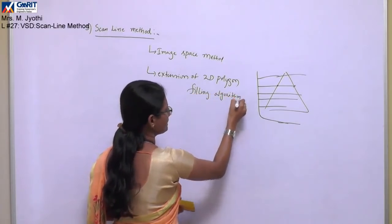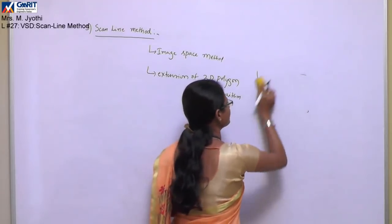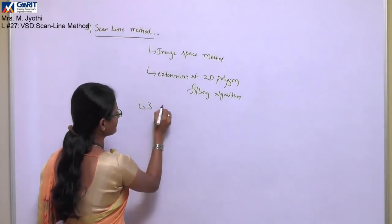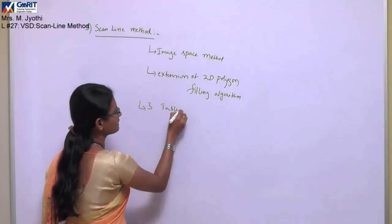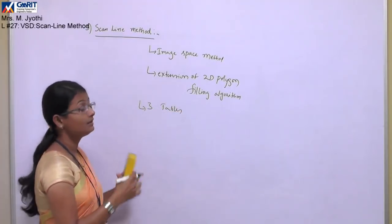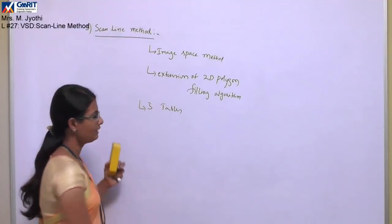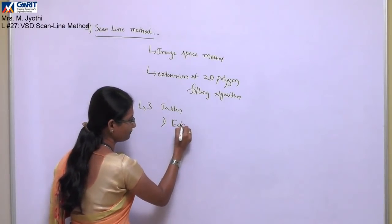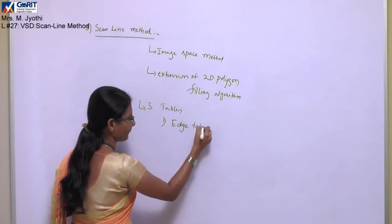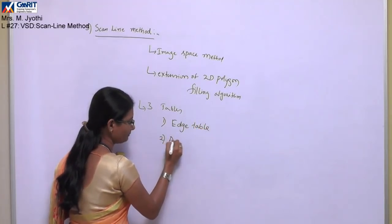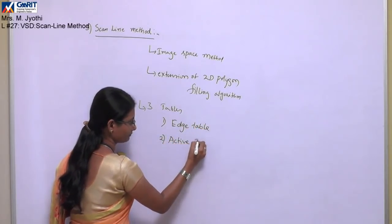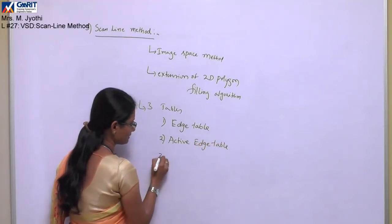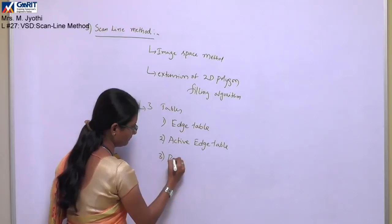This method uses three data structures, which are called three tables. These three tables used in the scan line visible surface detection method are: the edge table, the active edge table, and the polygon table.